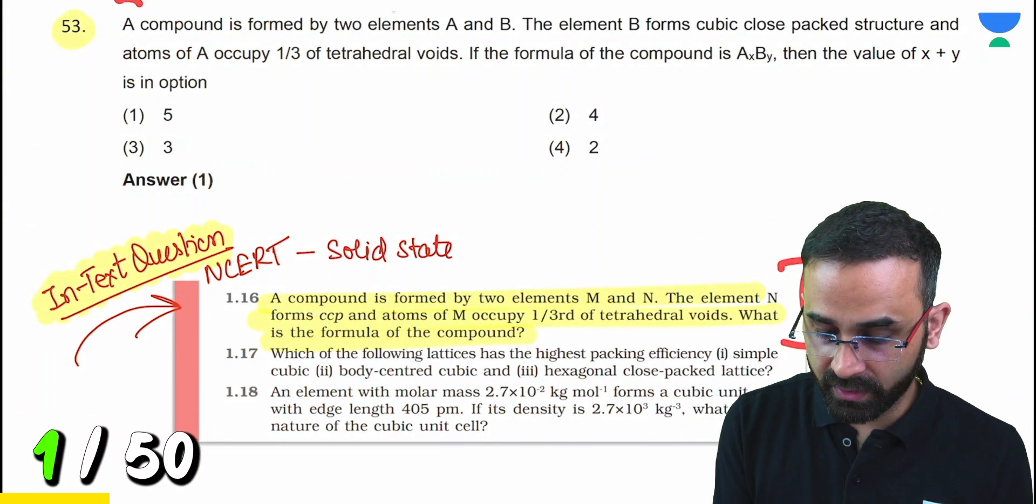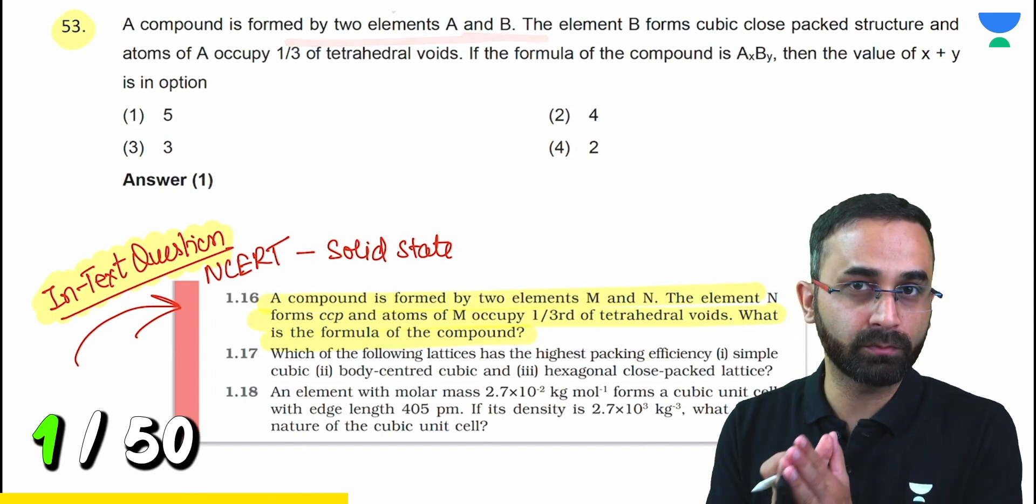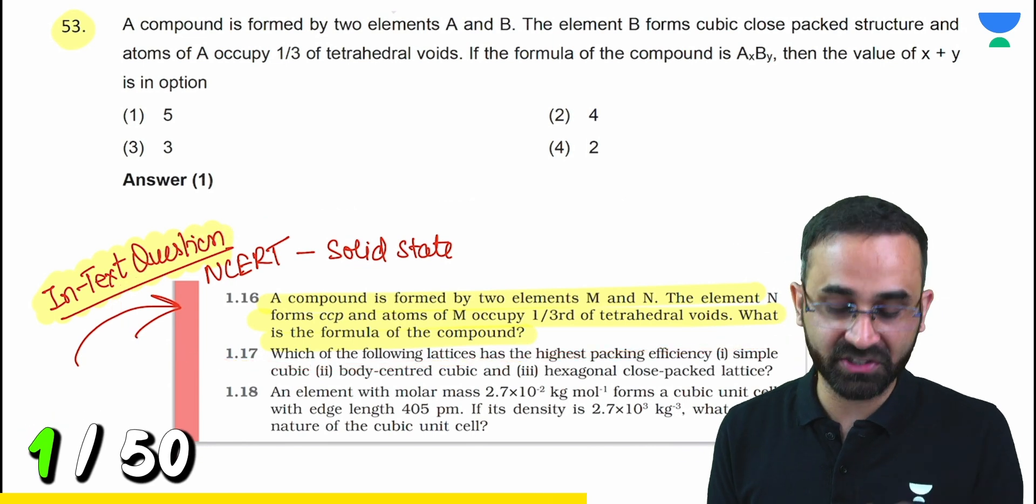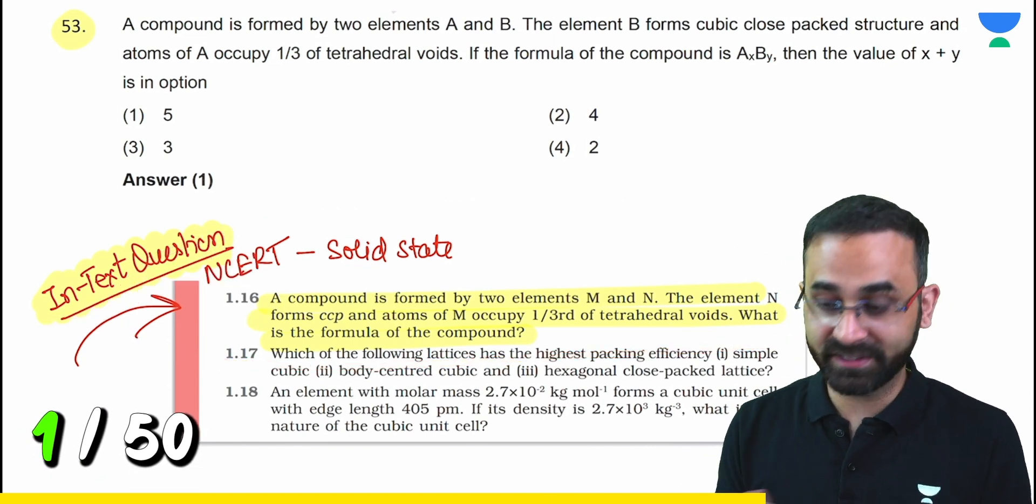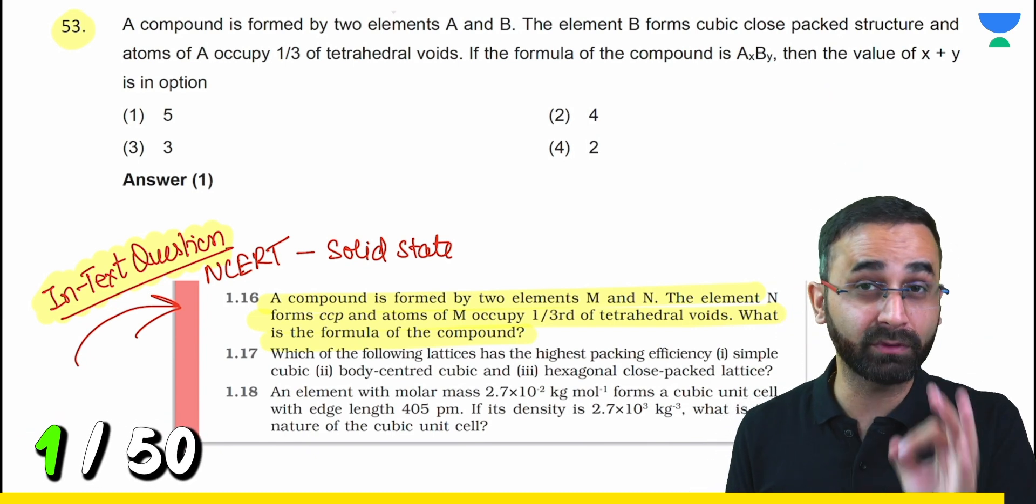Look at this question from NEET 2024: a compound is formed by two elements A and B. This question is from solid state. If you compare it with NCERT solid state in-text question 1.16, you'll find the same subjective question converted into an objective question directly from NCERT.